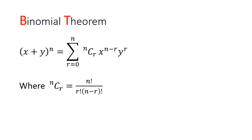This is the general formula for the binomial theorem to expand (x+y) to the power of n. The general term is n choose r times x to the power of (n minus r) times y to the power of r, where n choose r is n factorial divided by r factorial and (n minus r) factorial.